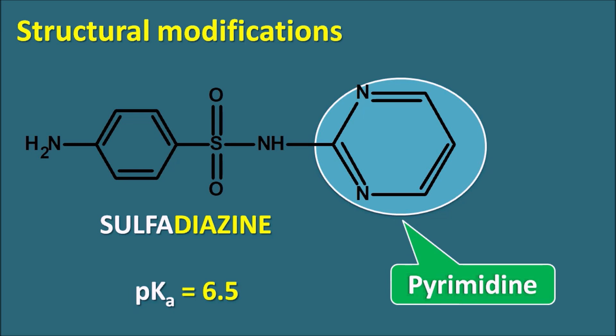Different sulfonamides with heterocyclic ring systems on the amide nitrogen reduce the pKa closer to urinary pH. As the pKa approaches urinary pH, salt formation increases, minimizing crystal formation in the urine.